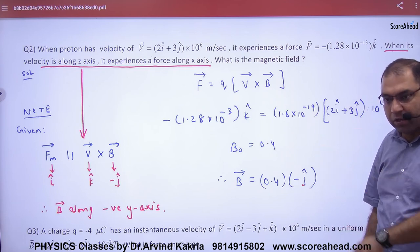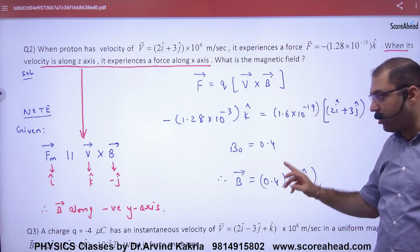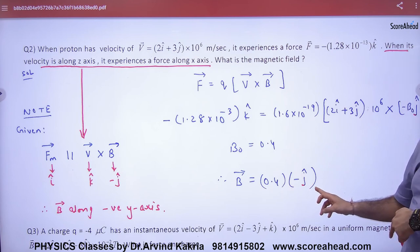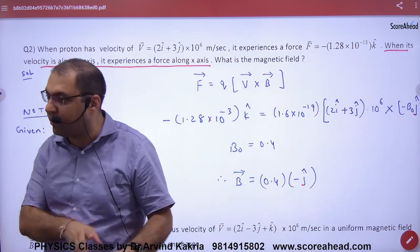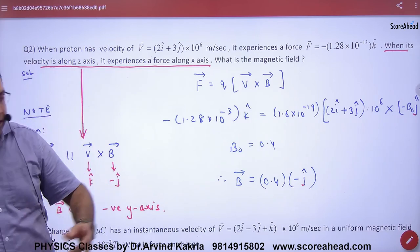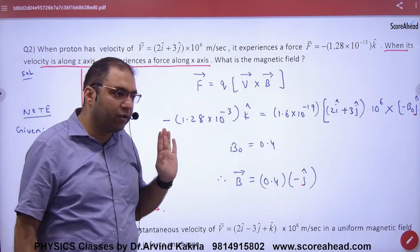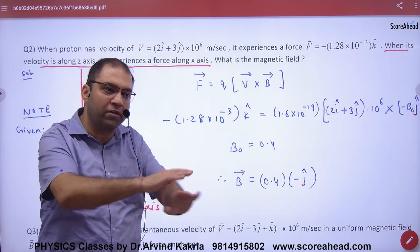So you have to put cross product. So B0. And what will be the final answer? 0.4 minus J cap. So all of this work is that you have to do plus one, the vector part. Plus two. Then you have to write this. After that you put your vectors and the answer is out.